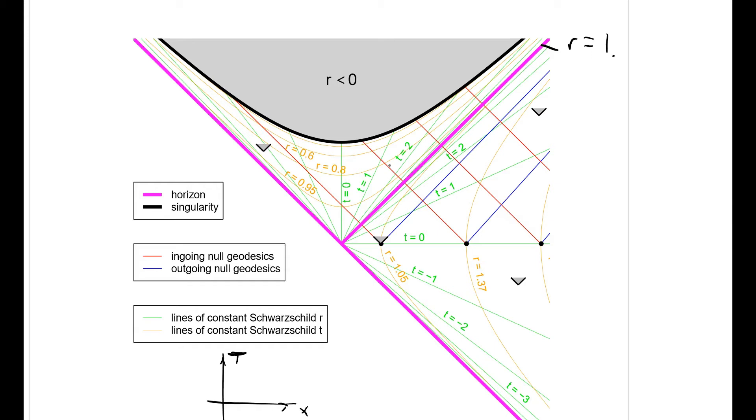When I was preparing this, I had an infelicity, not quite a bug, but an infelicity in my numerical integration routines, that basically meant that the lines behaved, the geodesics behaved very peculiarly near r equals one.